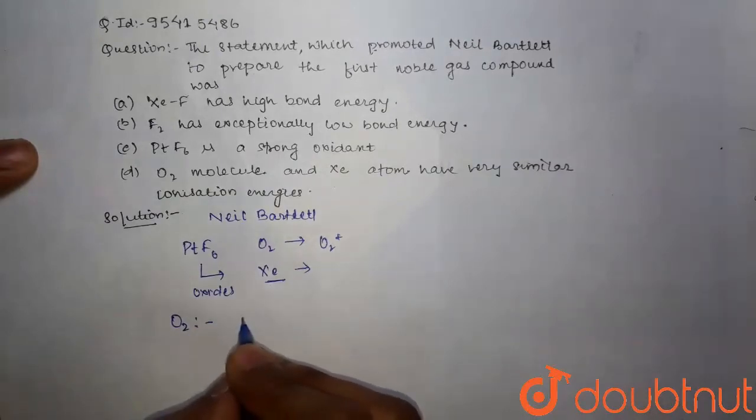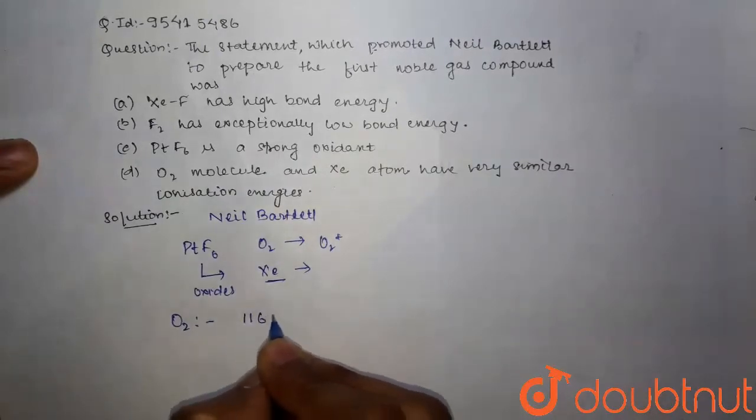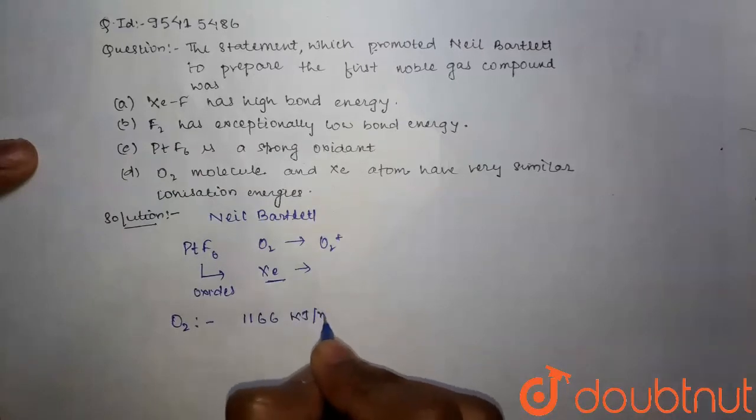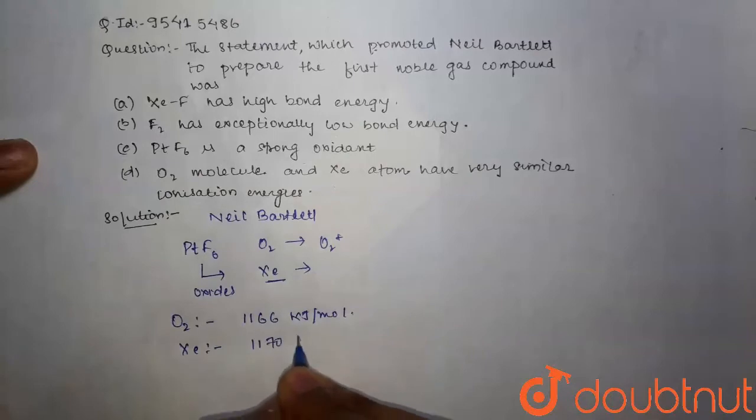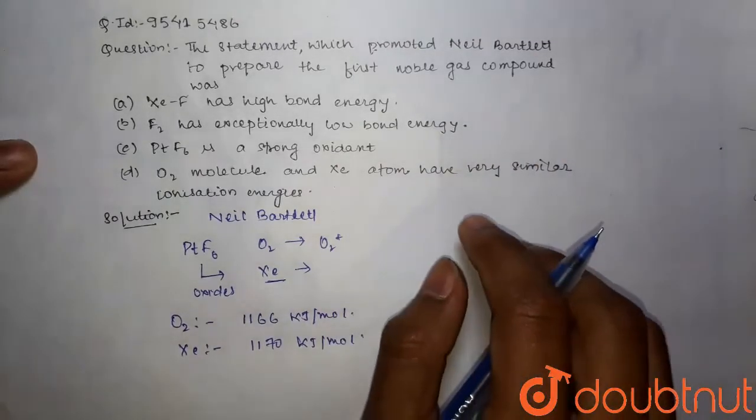Toh O2 ka xenon ionization enthalpy hota hai 1166 kilojoule per mol hai. Thik hai. Or xenon ka ionization enthalpy 1170 kilojoule per mol. Isi observation se unhone first noble gas compound ko prepare kiya tha.